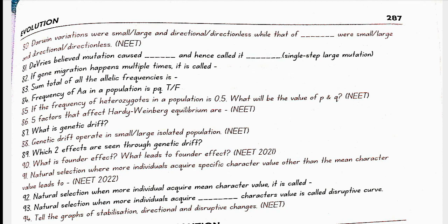Sum total of all the allelic frequencies is 1. Frequency of heterozygous in a population is 2PQ, not PQ. If the frequency of heterozygous in a population is 0.5, by taking 2PQ equal to 0.5 and applying the equation P plus Q equals 1 and P square plus 2PQ plus Q square equals 1, we get P equal to 0.5 and Q equal to 0.5. Five factors that affect Hardy-Weinberg equilibrium are gene migration or gene flow, genetic drift, mutation, genetic recombination and natural selection.